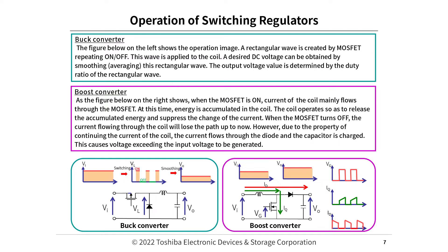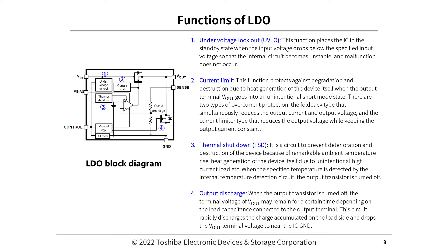Functions of LDO: (1) Under voltage lockout (UVLO) - this function places the IC in the standby state when the input voltage drops below the specified input voltage, so that the internal circuit does not become unstable and malfunction. (2) Current limit - this function protects against degradation and destruction due to heat generation when the output terminal Vout goes into an unintentional short mode. There are two types: the foldback type that simultaneously reduces the output current and output voltage, and the current limiter type that reduces the output voltage while keeping the output current constant.